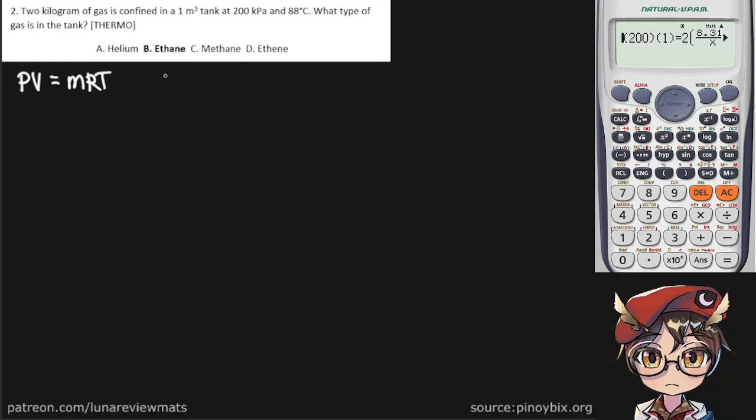We should write our givens first. Our mass is 2 kilograms, our volume is 1 cubic meter, pressure is 200 kilopascals, and our temperature is 88 degrees Celsius, which equals 361 Kelvin in absolute terms.